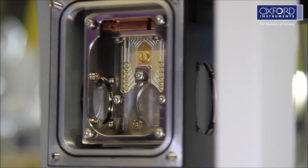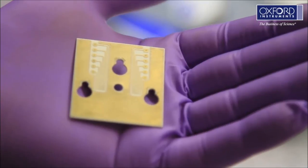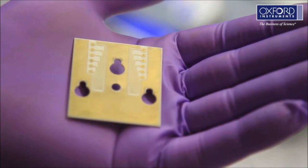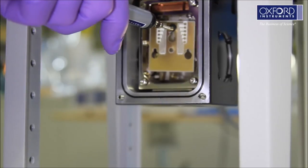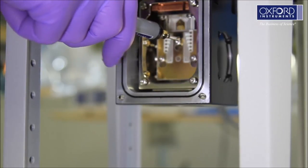Mount your sample onto the pack sample holder and make electrical connections between sample and the track on the pack. These connections can be made by wire bonding or soldering.